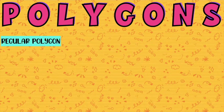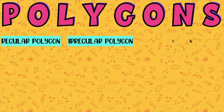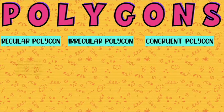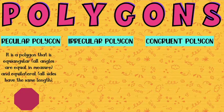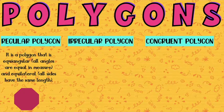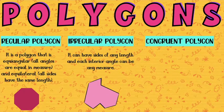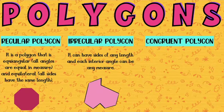Let's have the three kinds of polygons. First, we have regular polygon, irregular polygon, and lastly, the congruent polygon. When you say regular polygon, it is a polygon that is equiangular — all angles are equal in measure — and equilateral, meaning all sides have the same length. That is an example of a regular polygon. Next, we have the irregular polygon. When you say irregular polygon, it can have sides of any length, and each interior angle can be any measure. So in this irregular polygon, the sides are not the same — they have different measurements. Is that clear?